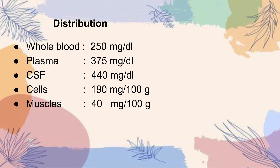Distribution. Whole blood: 250 mg per dl. Plasma: 375 mg per dl. CSF: 440 mg per dl. Cells: 190 mg per 100 g. Muscles: 40 mg per 100 g.